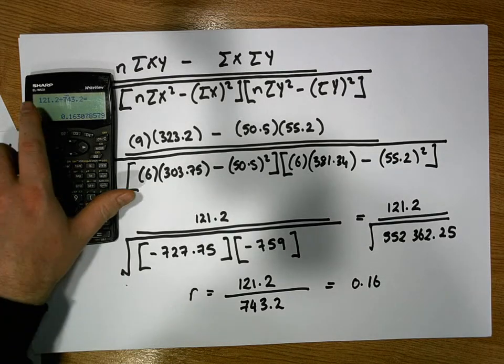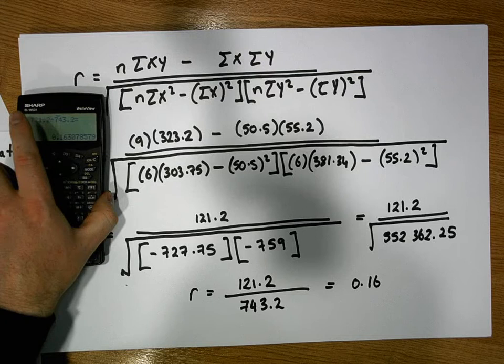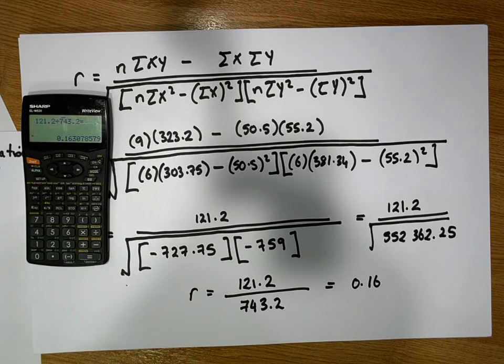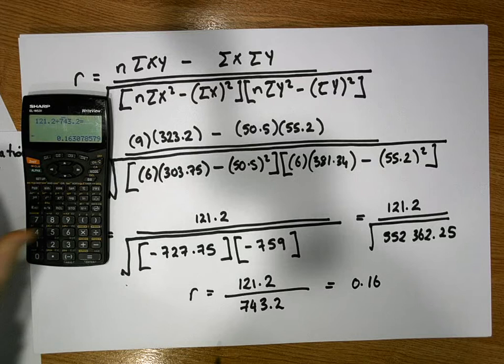So what we're saying is that the association between Dragon Isle and Ryanair share price is 0.16. Let's interpret that value.